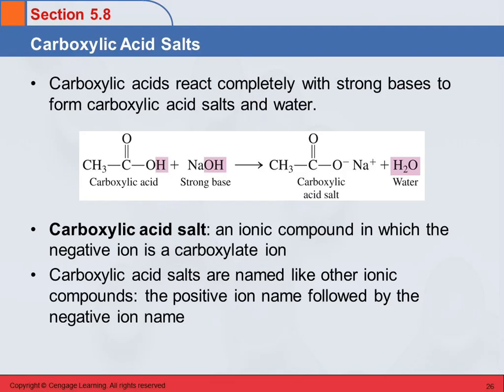A carboxylic acid salt is an ionic compound in which the negative ion is a carboxylate ion. These are named like other ionic compounds — you name the cation first and then the anion, just as we learned when naming carboxylate ions.